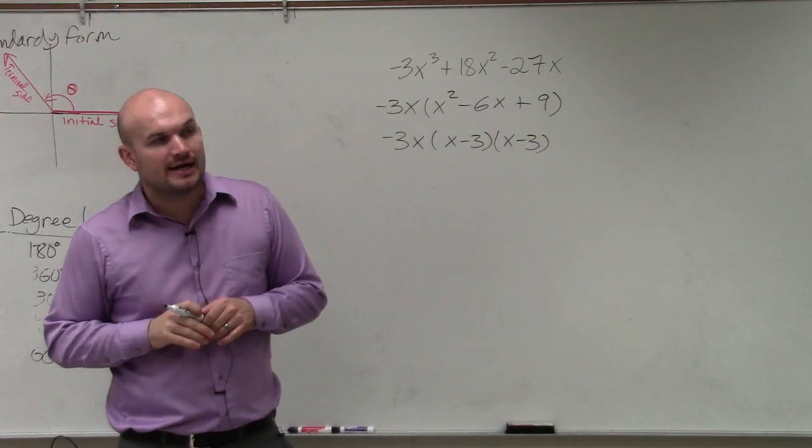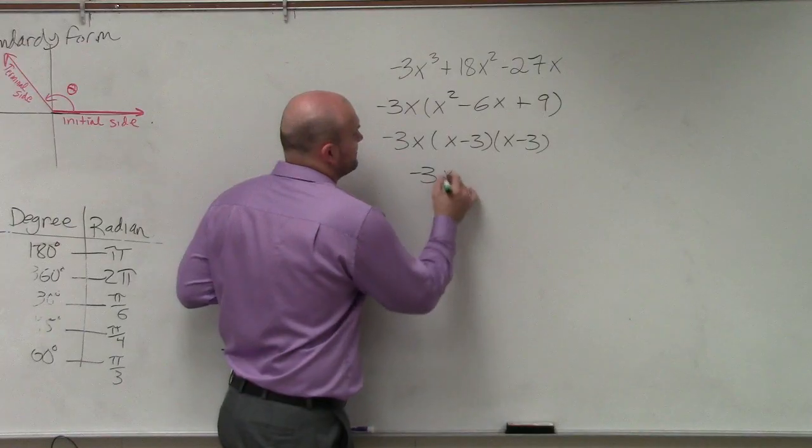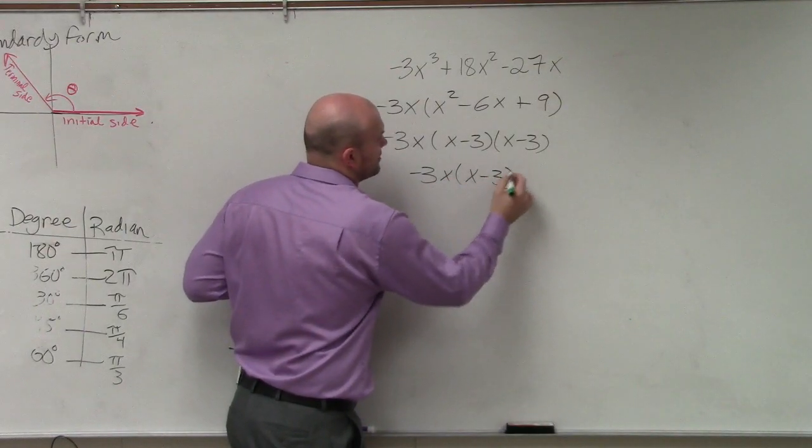So that would be a factored form, or you could also write it like negative 3x times x minus 3 squared.